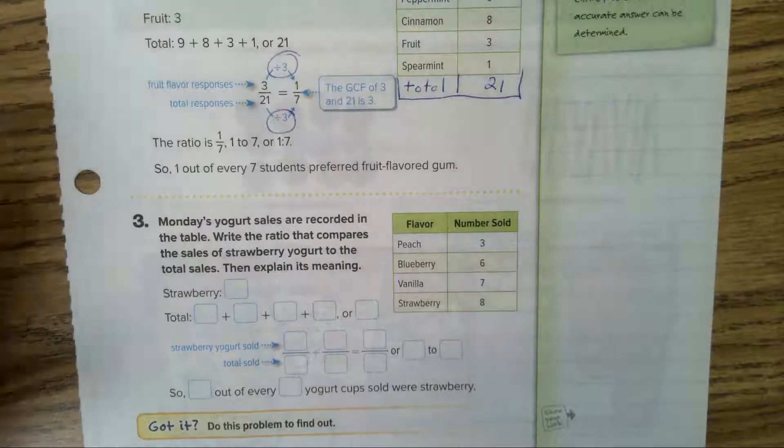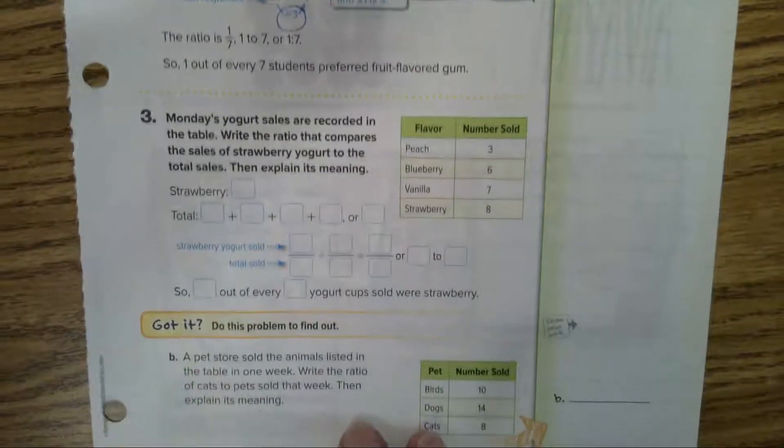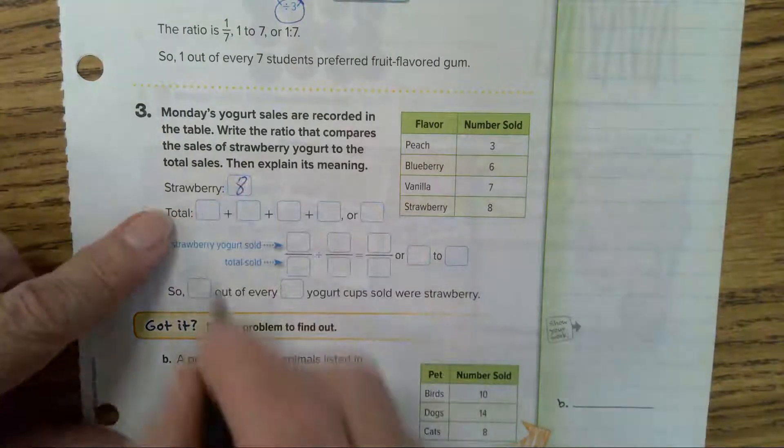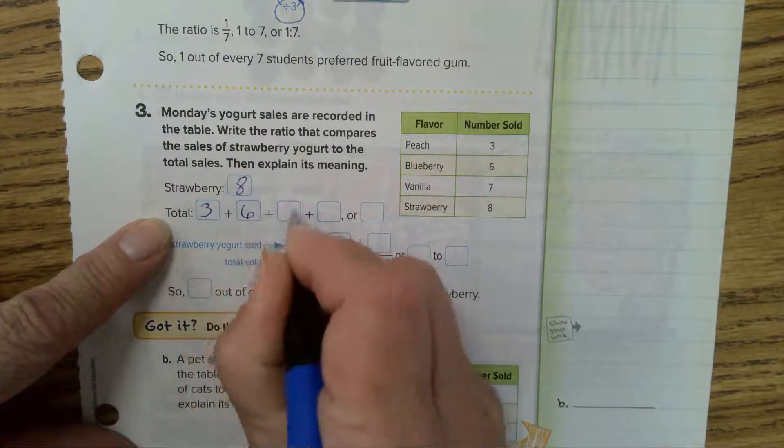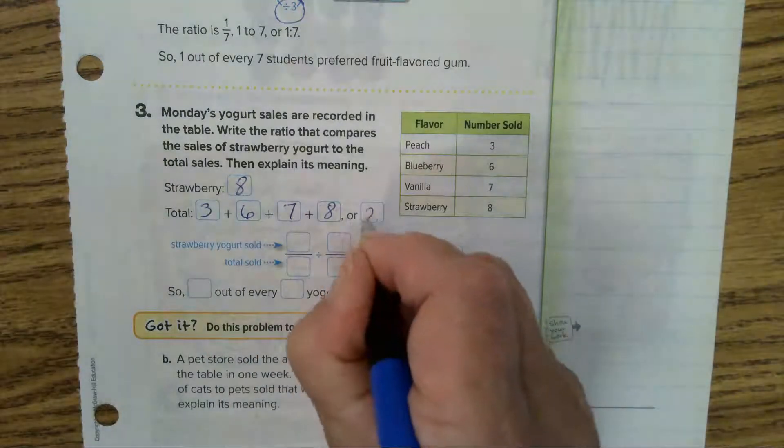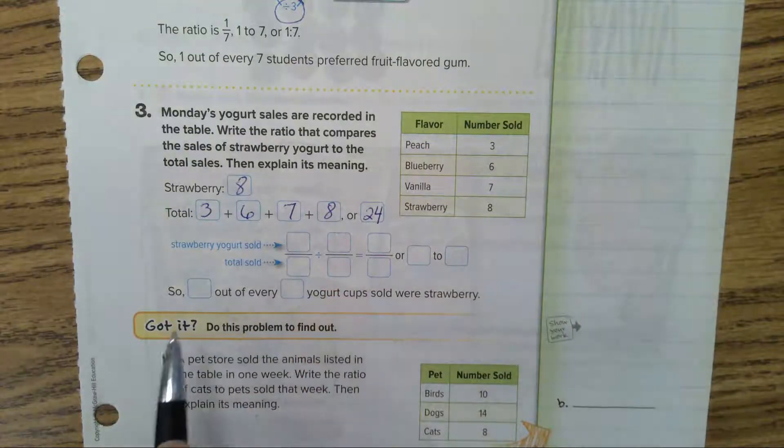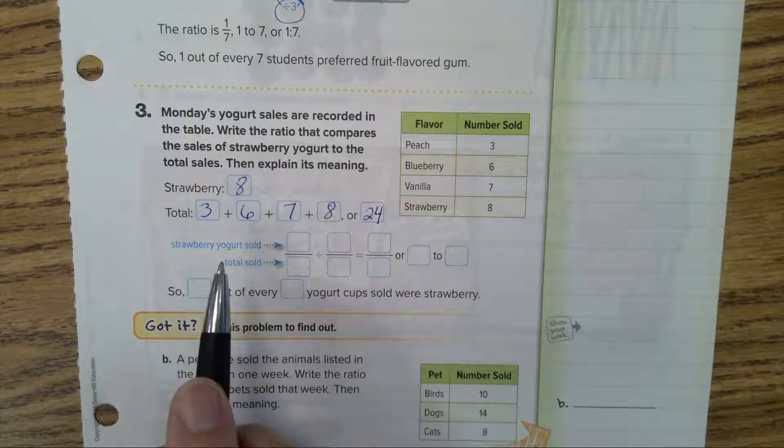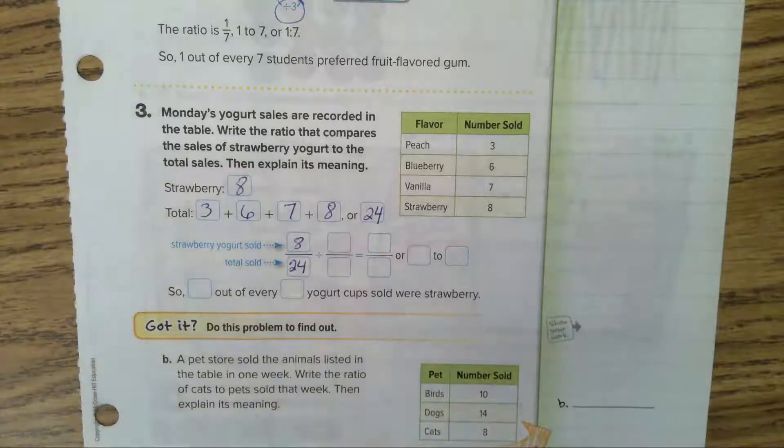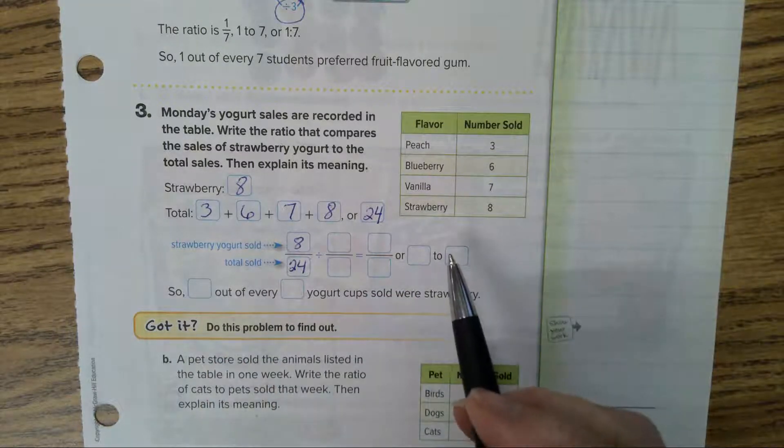When I add them all together it's 21. So we have 3 over 21. The greatest common factor of 3 and 21 is 3. Divide them both by 3 and you get a simplified fraction of 1/7.